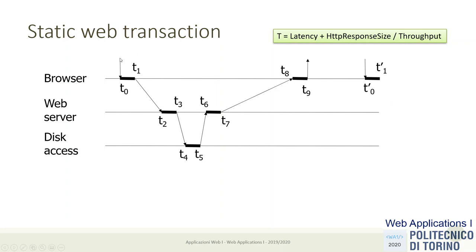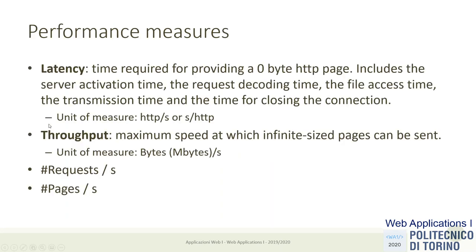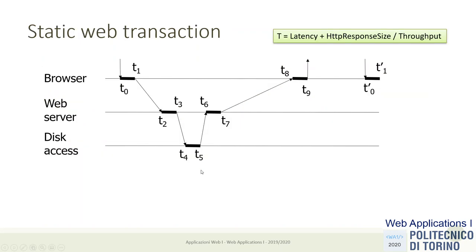This describes one HTTP request. When measuring performance, be careful to distinguish between raw HTTP requests per second and complete page loads per second. In the Wikipedia example there were 33 requests for one page, so mixing these metrics can be misleading.